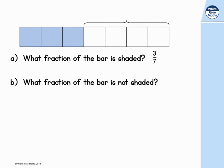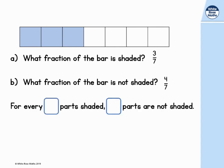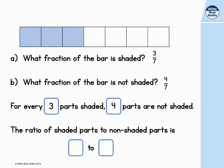What fraction of the bar is not shaded? Again, we can see this time that four out of the seven parts are not shaded. So for every three shaded parts, four are not shaded. The ratio of shaded parts to non-shaded parts is three to four.